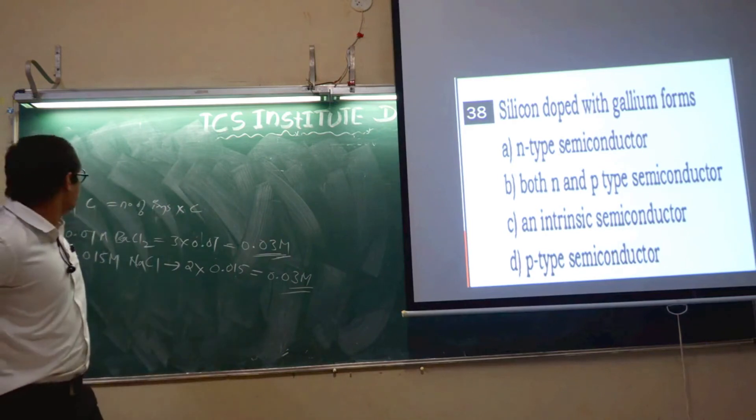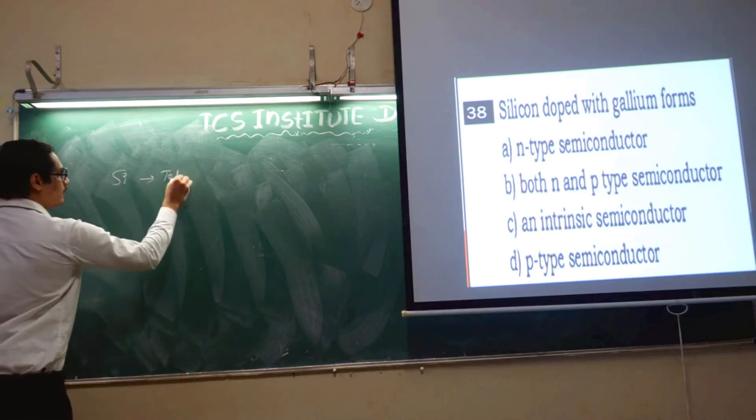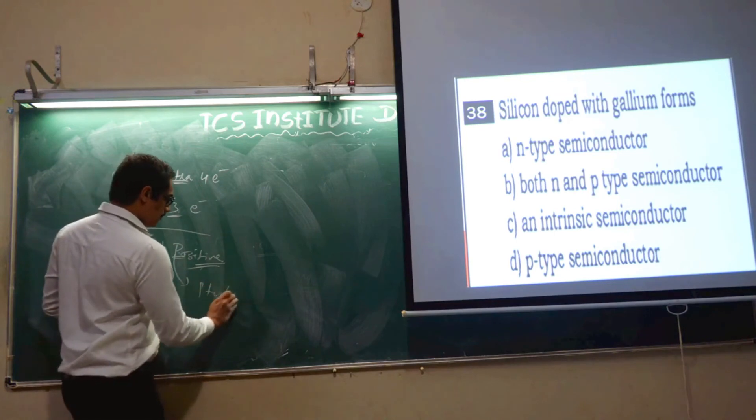Silicon doped with gallium forms what? Silicon is tetravalent with valency 4. Gallium has valency 3, containing 3 electrons in the valence shell. If we replace one silicon with gallium, there will be one electron short, creating a positive charge or hole. If it has positive charge, one electron less, it will form a p-type semiconductor. The answer is option B.